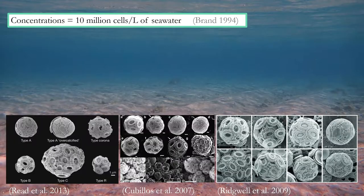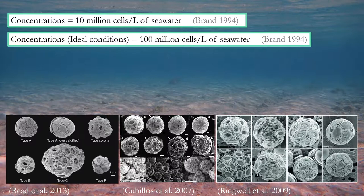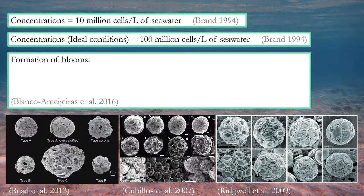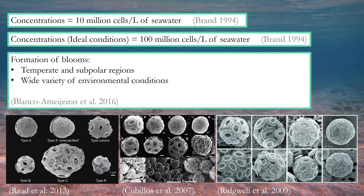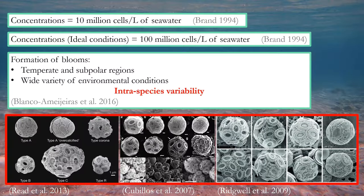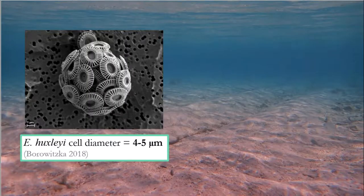E. huxleyi frequently grows to concentrations of 10 million cells per litre of seawater and has even been found to reach 100 million cells per litre of seawater in ideal conditions, and is capable of forming massive blooms in temperate and subpolar regions under a wide variety of environmental conditions due to its considerable intraspecies variability. Despite the small size of E. huxleyi cells, that being 4 to 5 micrometres in diameter,